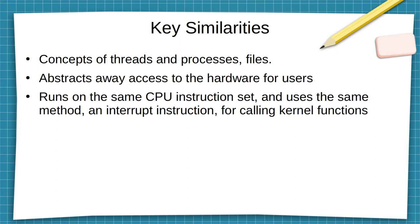The main similarities between Windows and Ubuntu is that they run on the same hardware, or the same processor. This is an important aspect of an operating system — it abstracts away the details of the hardware so that programmers can focus on reusing certain features.